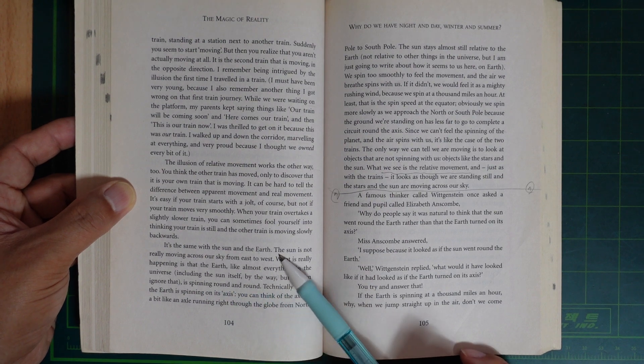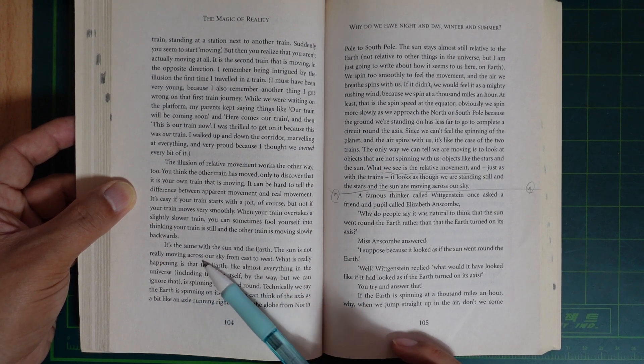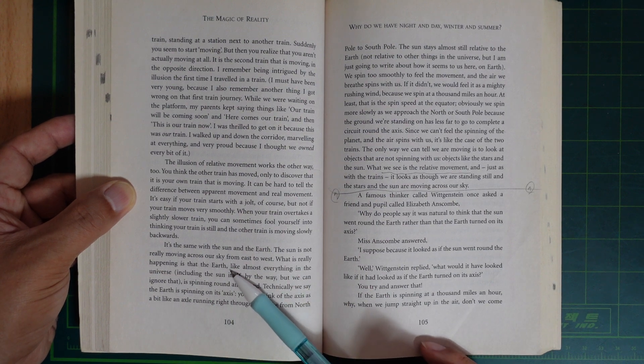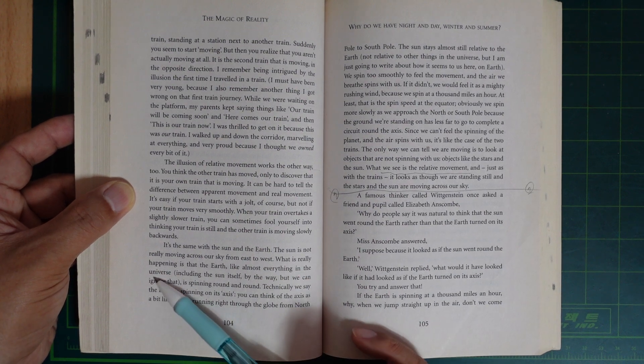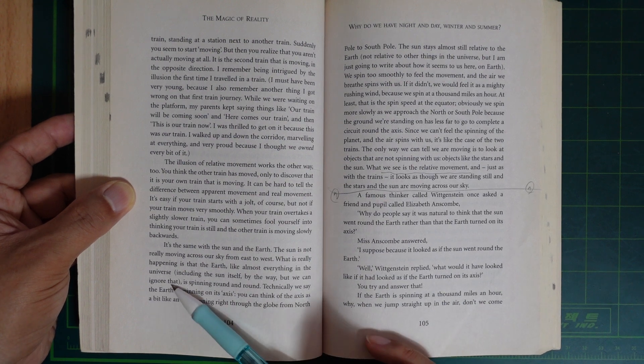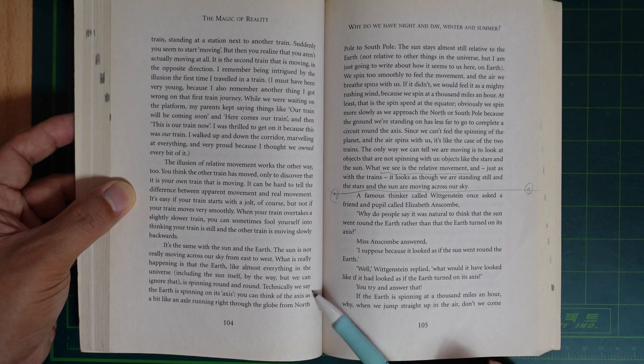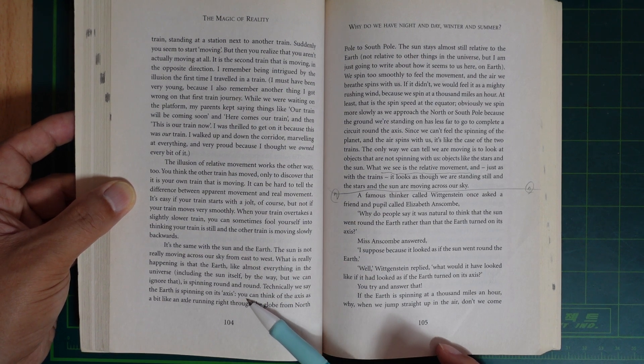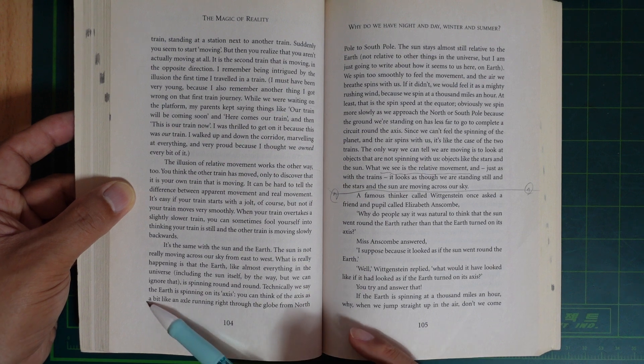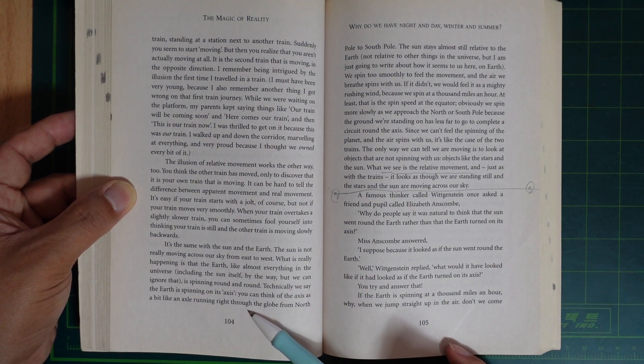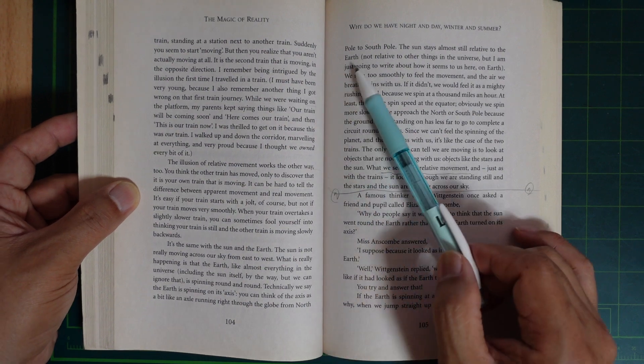The same is true with the sun and the earth. The sun is not really moving across our sky from east to west. What's really happening is the earth, like almost everything in the universe, including the sun itself by the way (but you can ignore that), is spinning round and round. Technically, you say the earth is spinning on its axis. You can think of the axis as a bit like an axle running right through the globe through north pole to south pole.